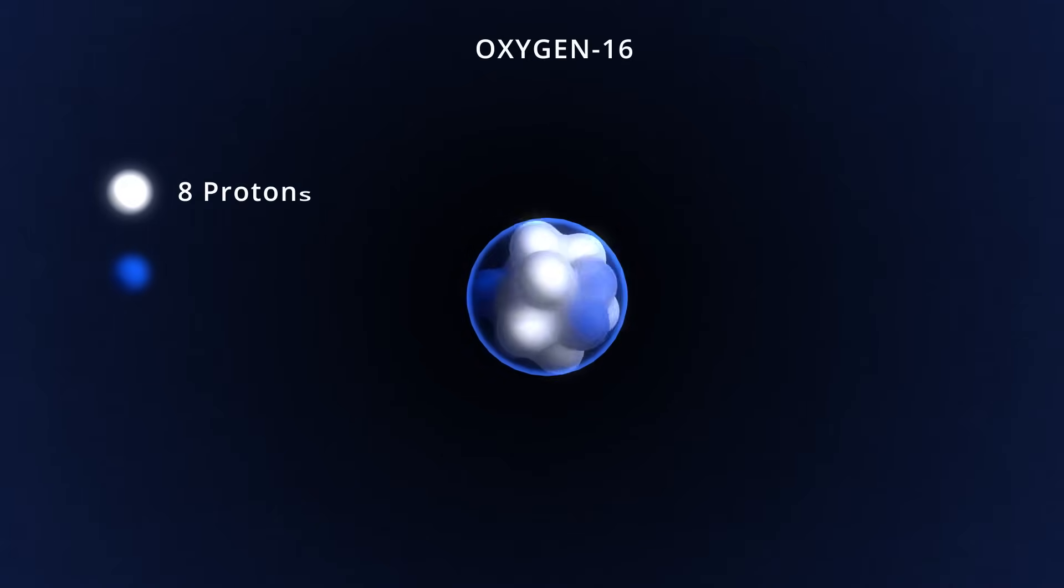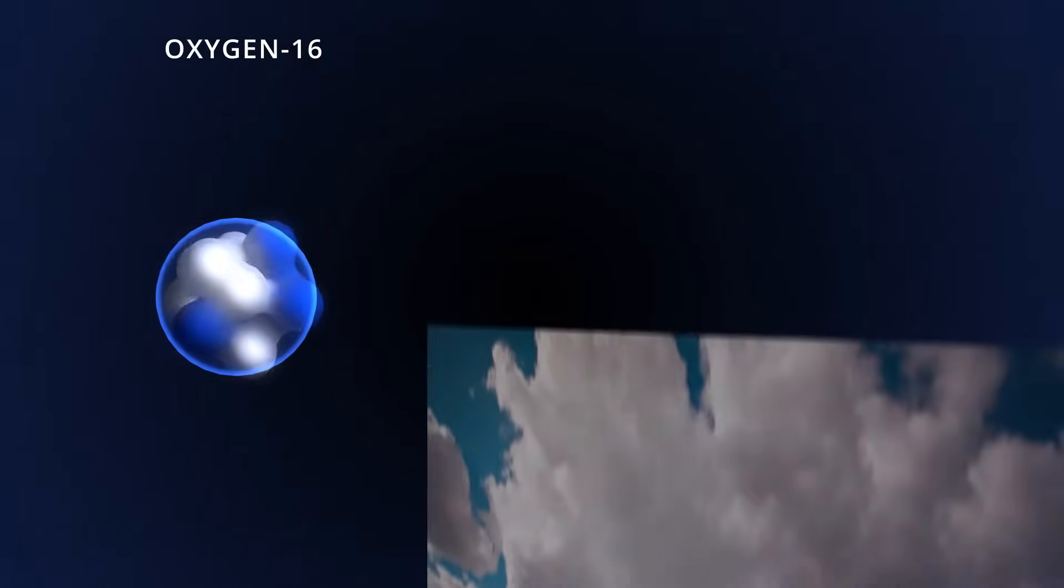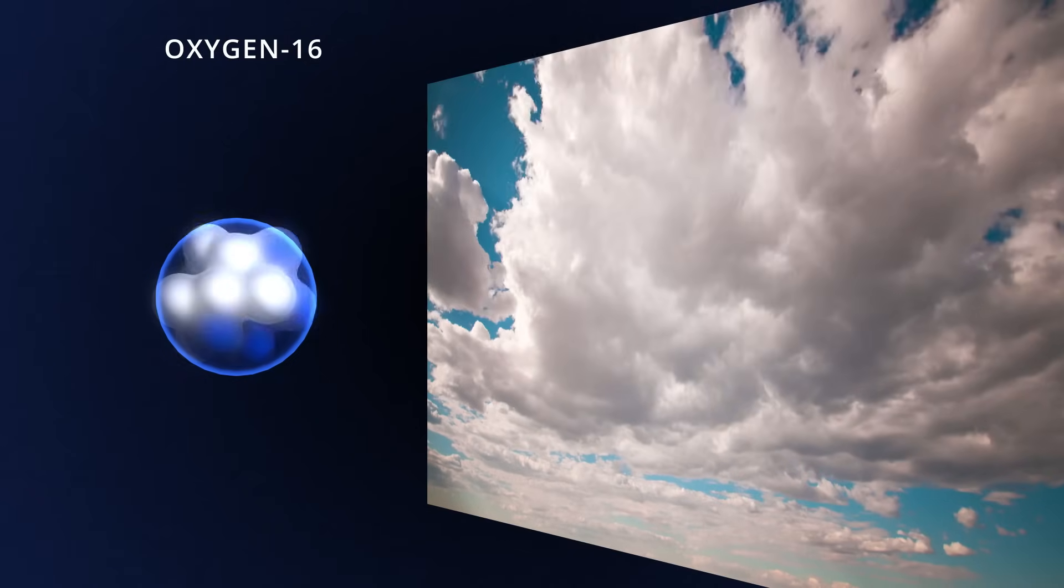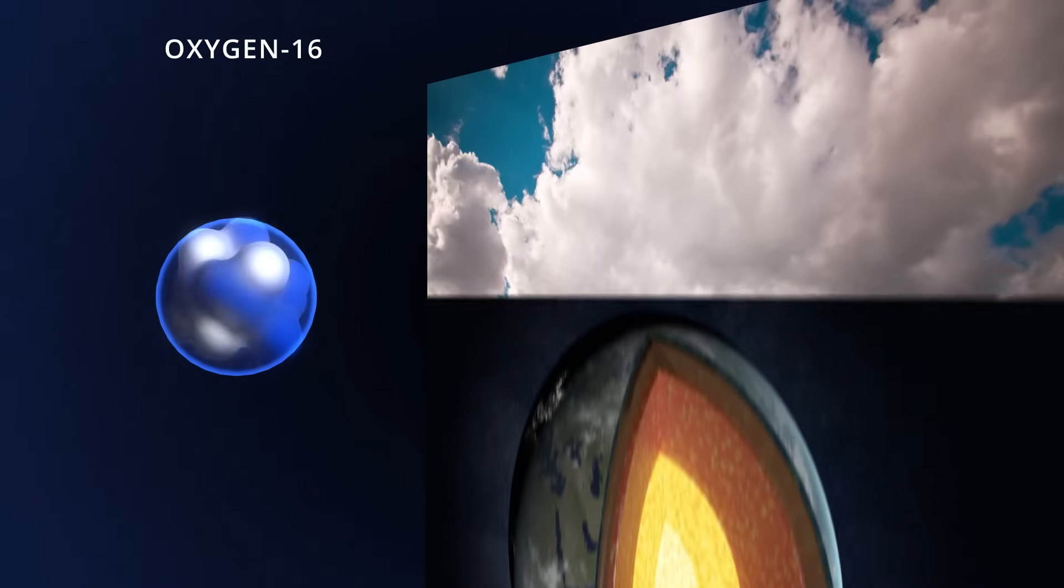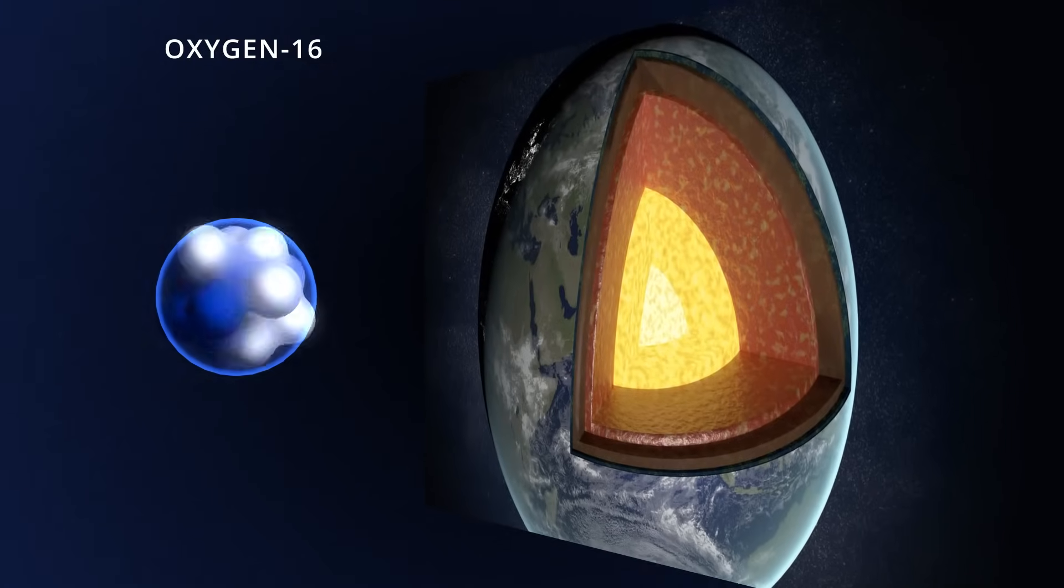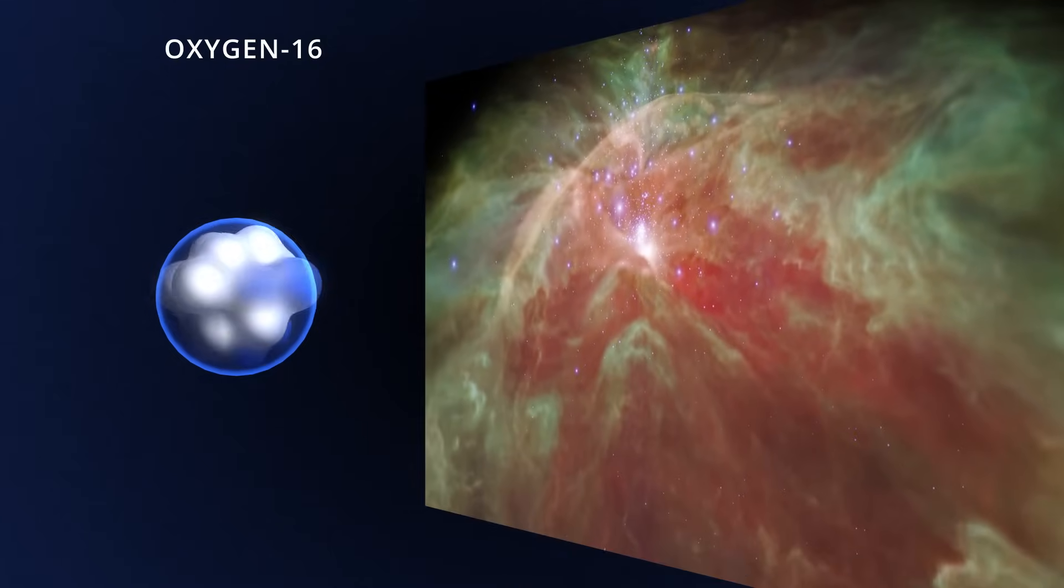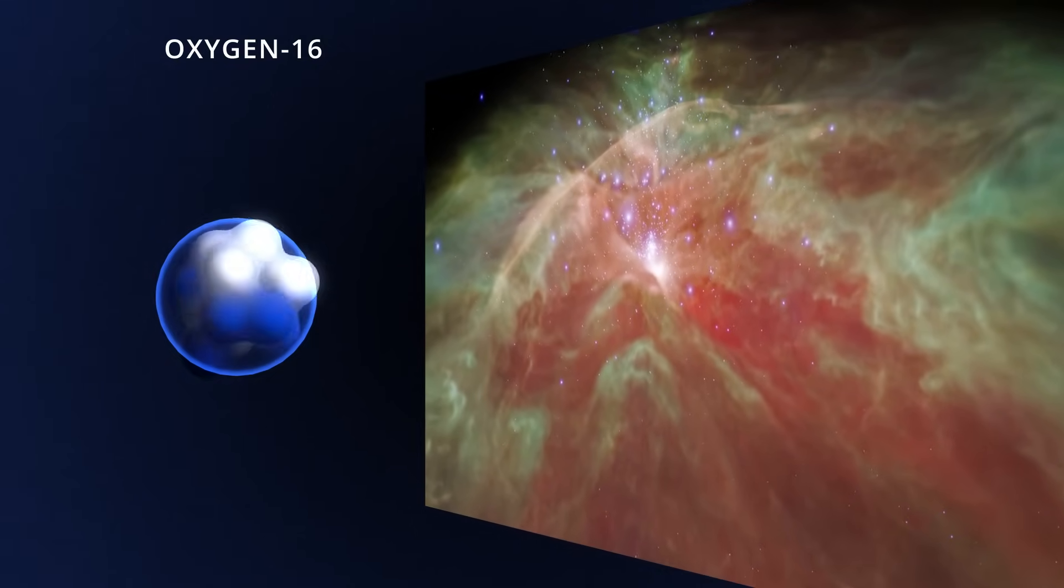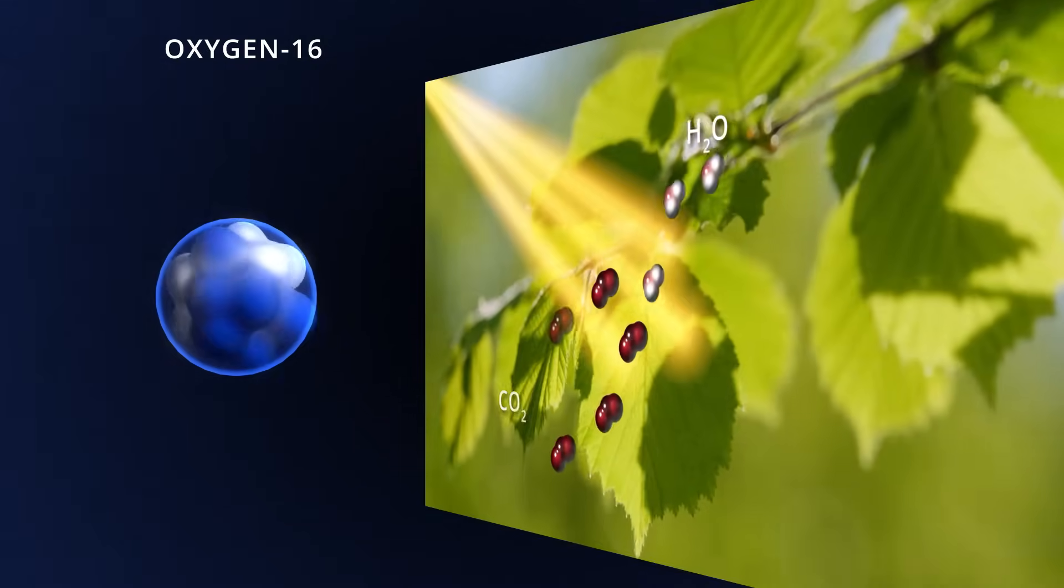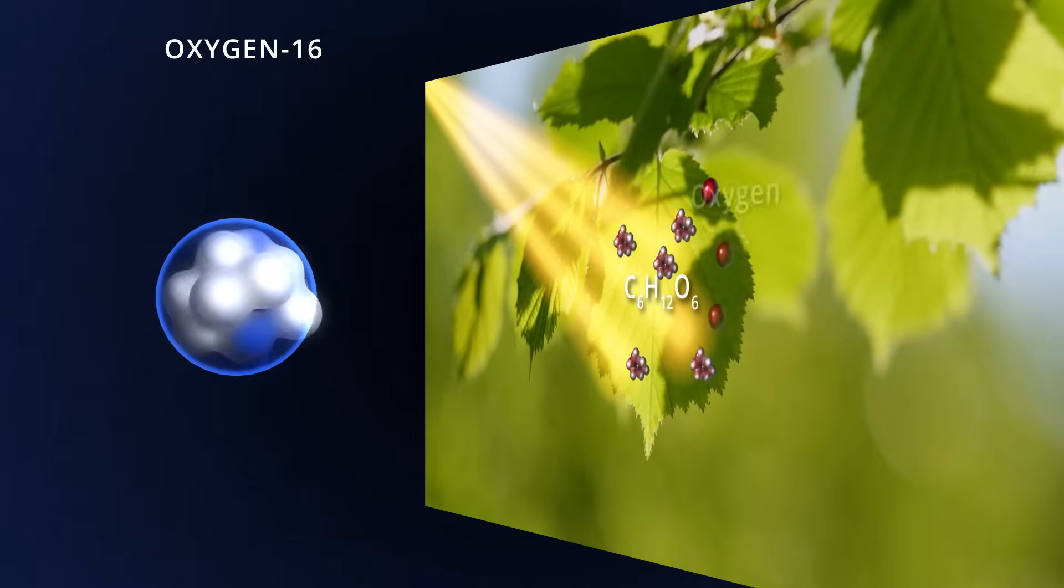Carbon-12 consists of 6 protons and 6 neutrons that occupy a sphere with a radius of 2.5 femtometers. Oxygen-16 packs two more protons and neutrons each in a sphere with a radius of 2.7 femtometers. Those additional protons and neutrons make a huge difference. Oxygen is a gas. Oxygen is the most abundant element in Earth's crust. And after hydrogen and helium, it is the third most abundant element in the universe. Oxygen is continually being replenished in Earth's atmosphere by photosynthesis.